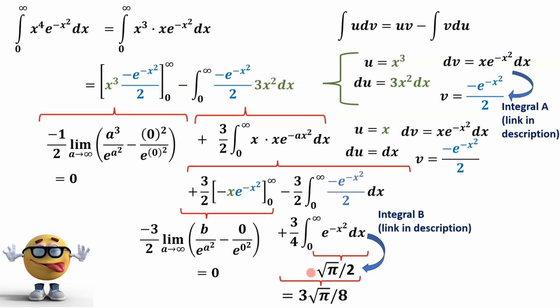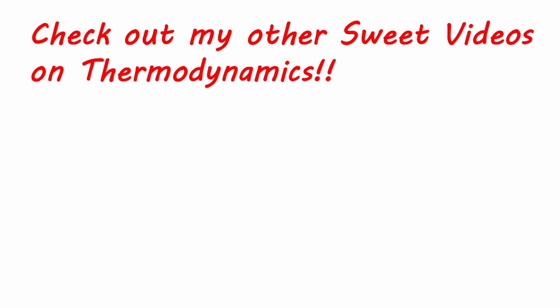And this is really what we got. So if we multiply what this integral is, root pi over 2, by the 3 over 4, we get 3 root pi over 8. And that's what our integral is. So the integral of x to the 4th times e to the negative x squared dx from 0 to infinity is 3 root pi over 8. All right, y'all, good luck on your midterms, final exams, assignments, all that stuff. And I'll see you in the next video. Cheers.